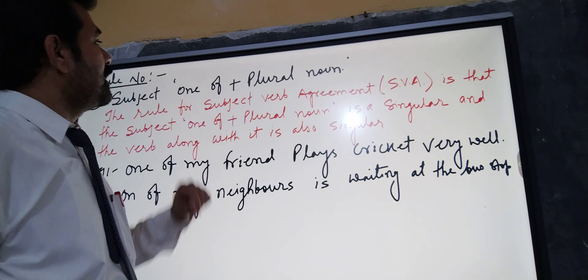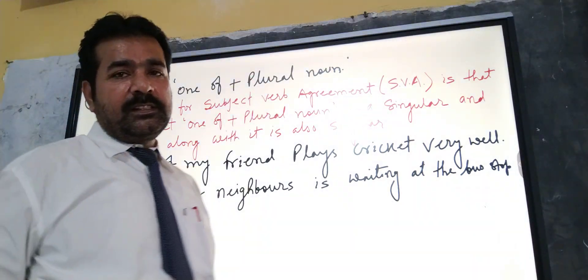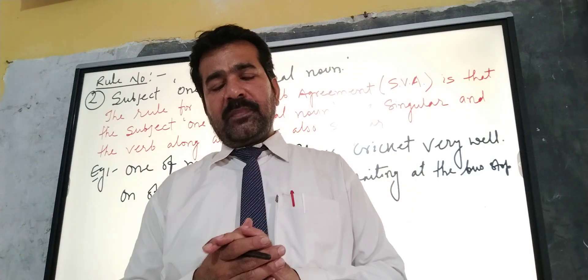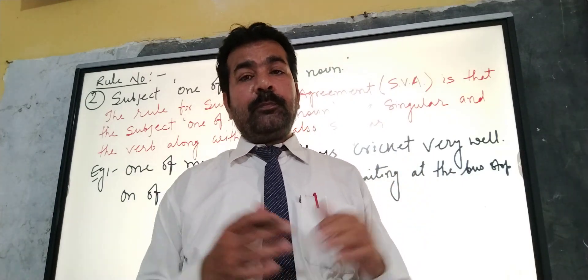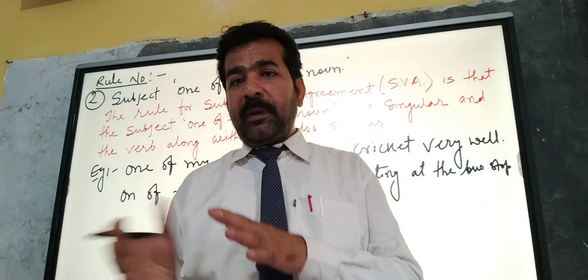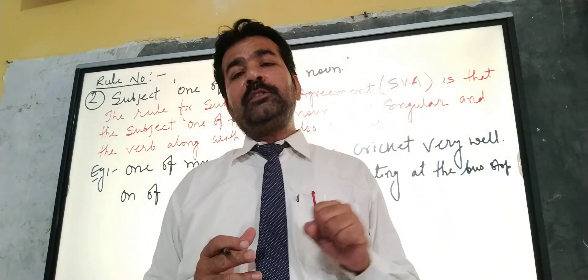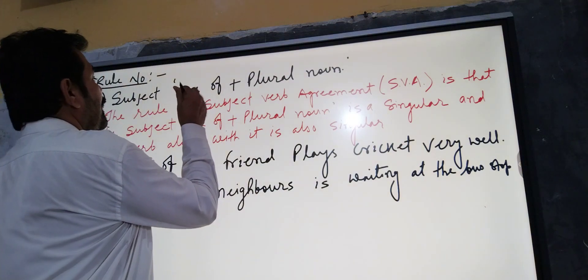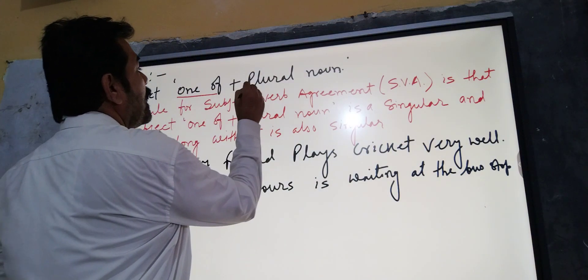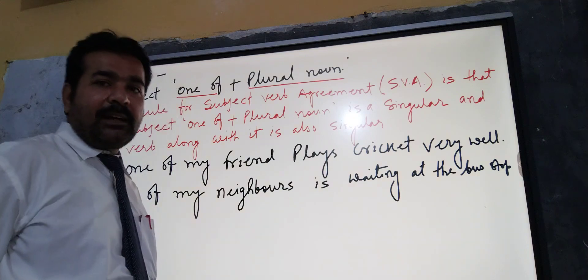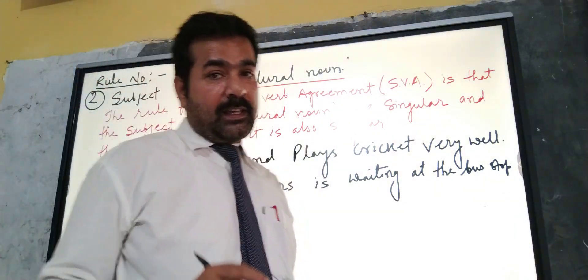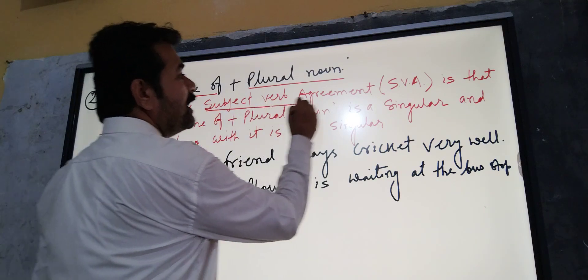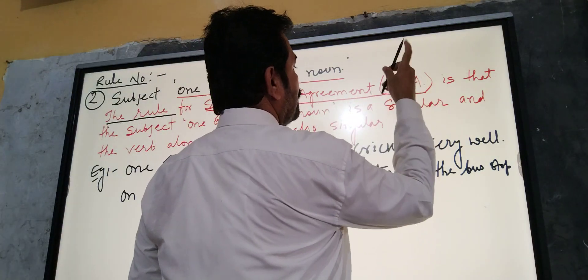When we see in the subject we have 'One of' plus a plural noun — like 'one of my friends', where 'my friends' is plural. This is the structure: 'one of + plural noun'. The rule for subject-verb agreement is this — we have a short form in the list, the SBA list.